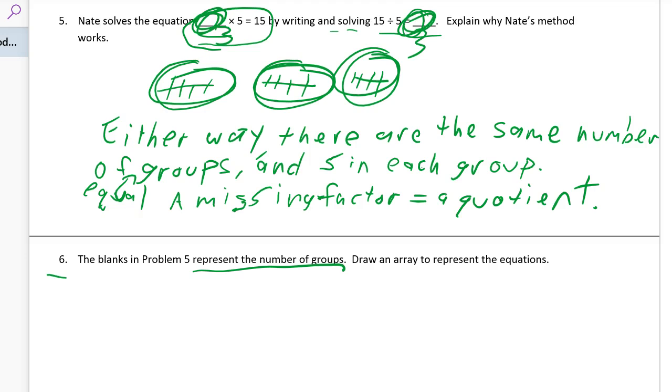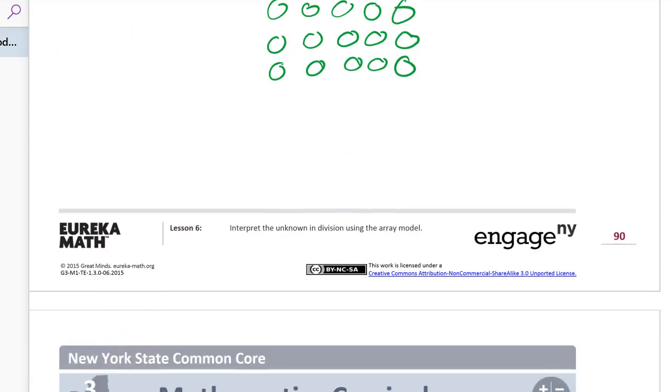We have 3 groups of 5. So that means we're going to have 5 as the number of groups. So that's going to be our number of rows. 1, 2, 3, 4, 5. And each row is going to have 5. 1, 2, 3, 4, 5. 1, 2, 3, 4, 5. And there's our array. Just make sure your array has rows and columns. And it looks like an array. And then we're done.